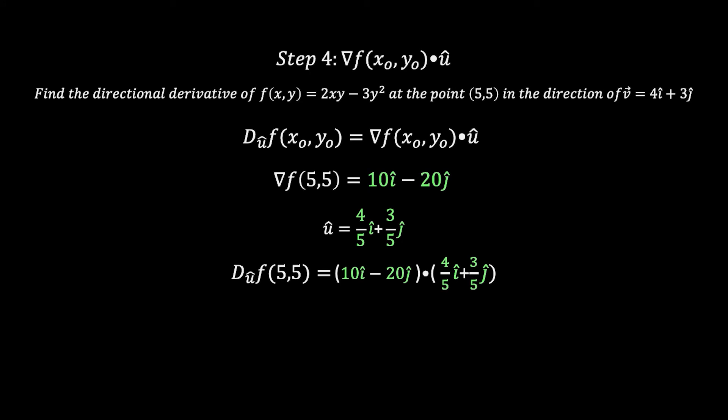To do that, we're going to multiply our i's with our i's and our j's with our j's. That'll give us 40/5 - 60/5. Of course that simplifies to 8 - 12, and 8 - 12 is -4. So this right here is our final answer.